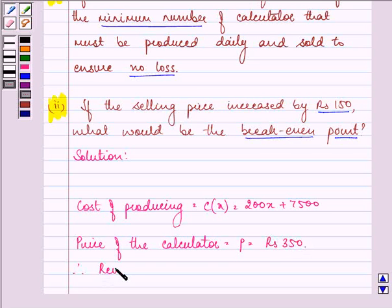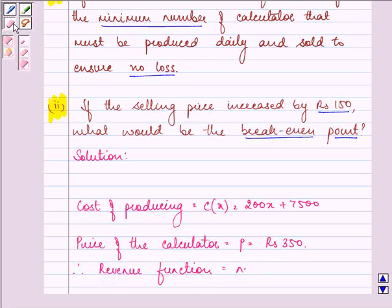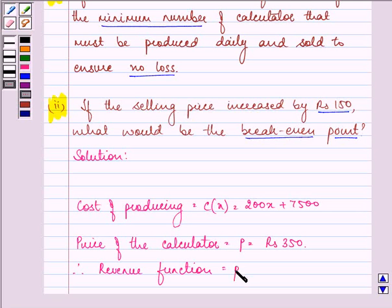We can easily find out the revenue function. As we are producing x calculators and selling x daily, it will be price times quantity that we have sold, so it will be 350 times x, that is R(x) = 350x.